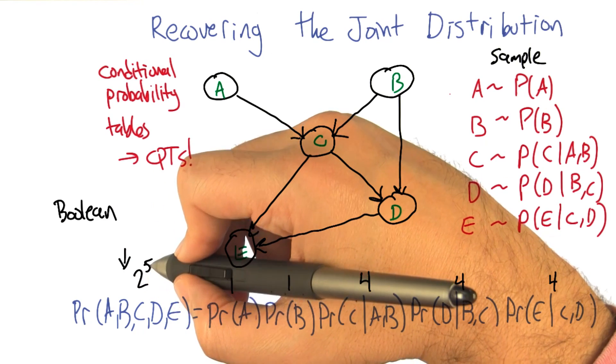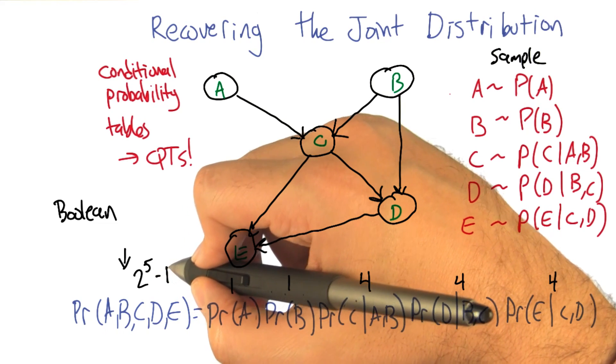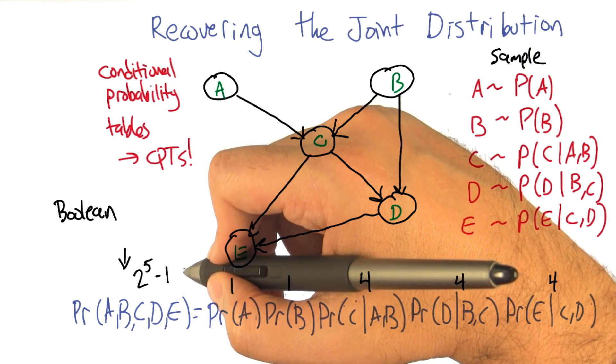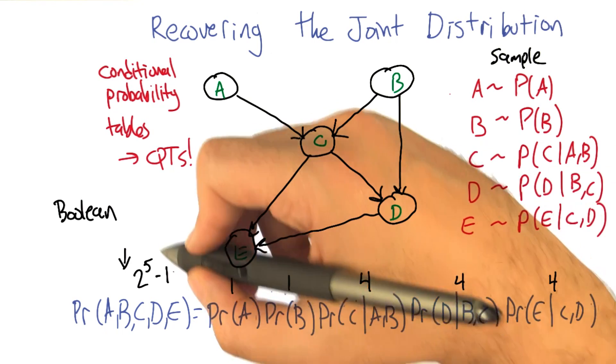So this is really what, two to the fifth minus one, I guess? Because if I tell you the first 31 values, the 32nd value is just one minus the sum of all the others. So this is 14 numbers versus 31.